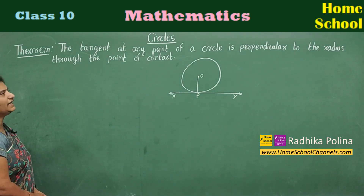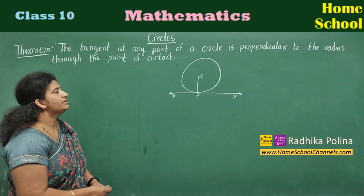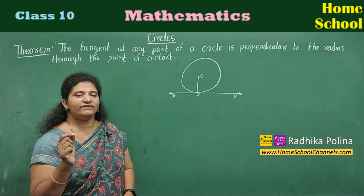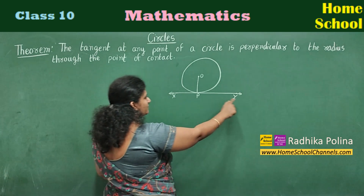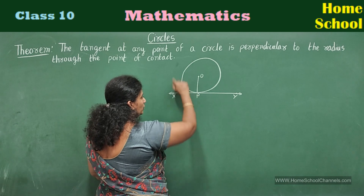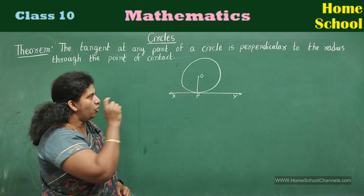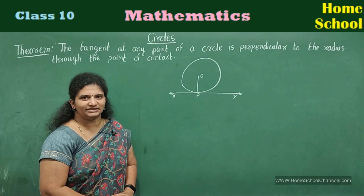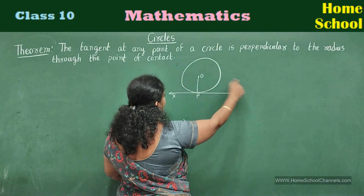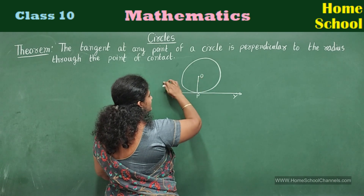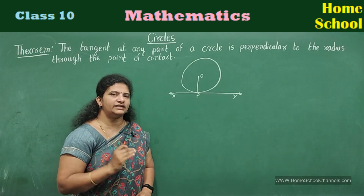Let's see the first theorem from this chapter. You can see the statement and a figure there: the tangent at any point of a circle is perpendicular to the radius through the point of contact. What is a tangent? A tangent is a line which touches the circle at only one point. Here, XY is a tangent touching at point P to the circle with center O — P is called the point of contact. A secant, on the other hand, is a line that passes through the circle touching it at two points.